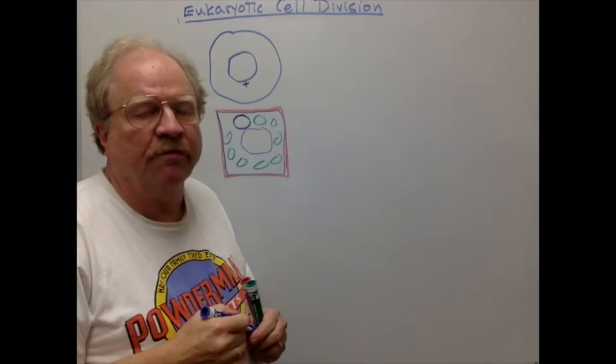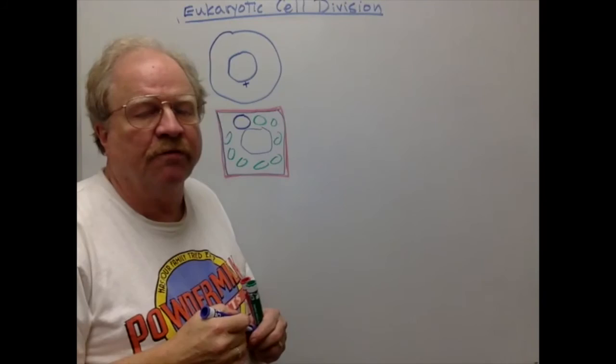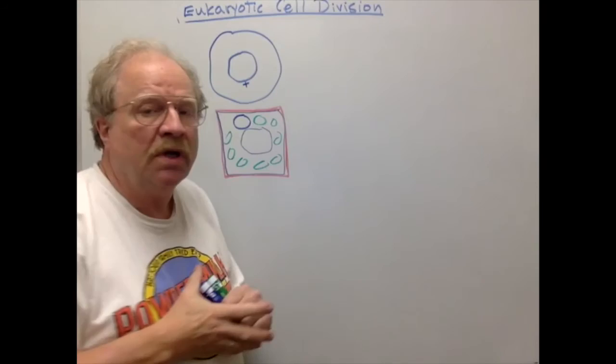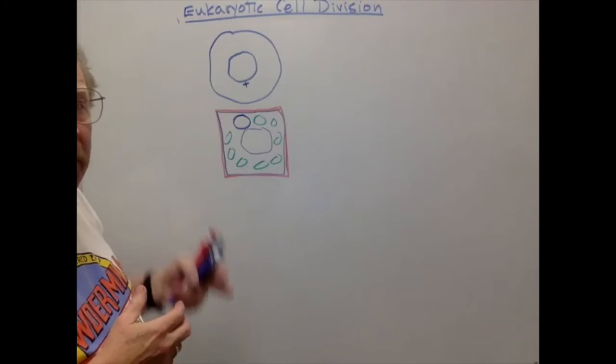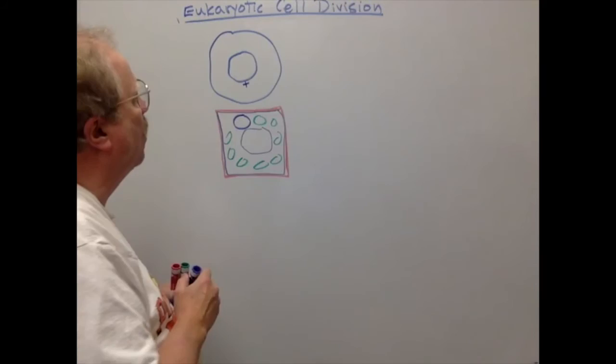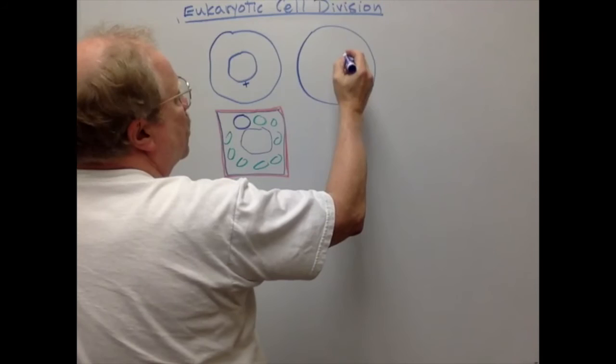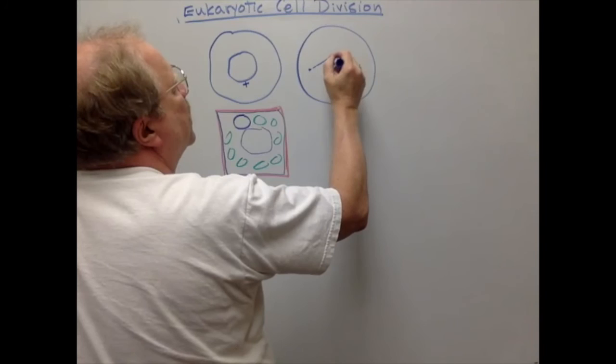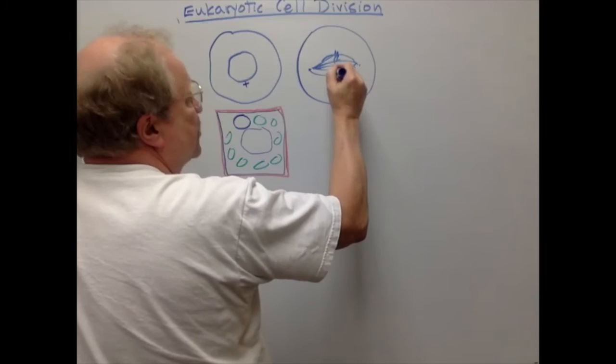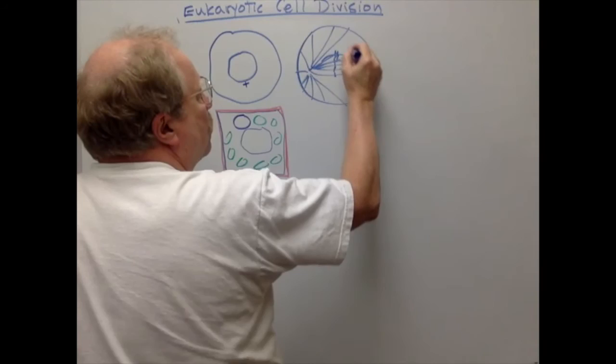There are a couple of major differences in the process of mitosis in plants versus animals, but the surprising thing is how similar they are. Once the spindle fiber starts to form and the nuclear membrane disappears, in animal cells we had spindle fibers going from pole to pole, some attaching to chromosomes, and we also had astral rays.